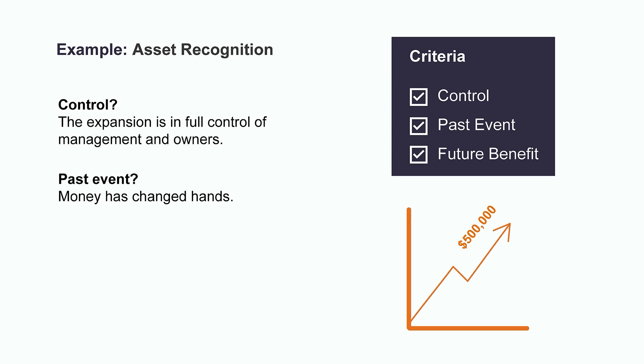Number two: did this come about as a result of a past event? This is really just confirming that the transaction has already taken place. In this case, the criteria is met because the money has changed hands and the renovation is complete.